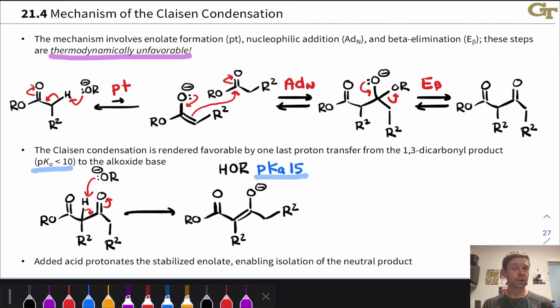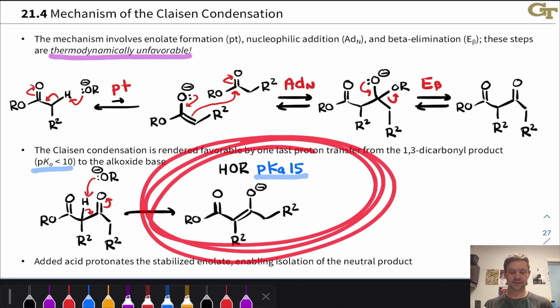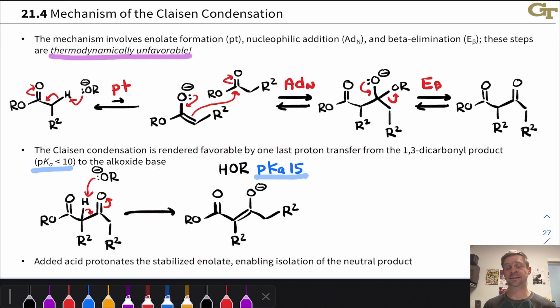So this proton transfer does convert a stronger acid into a weaker acid, so it's thermodynamically favorable. And this is what drives the entire Claisen condensation. When you run the reaction, it will sit at this state with the stabilized enolate and neutral alcohol until you do something to neutralize the enolate. This is why we need the acidic workup at the end of the reaction.